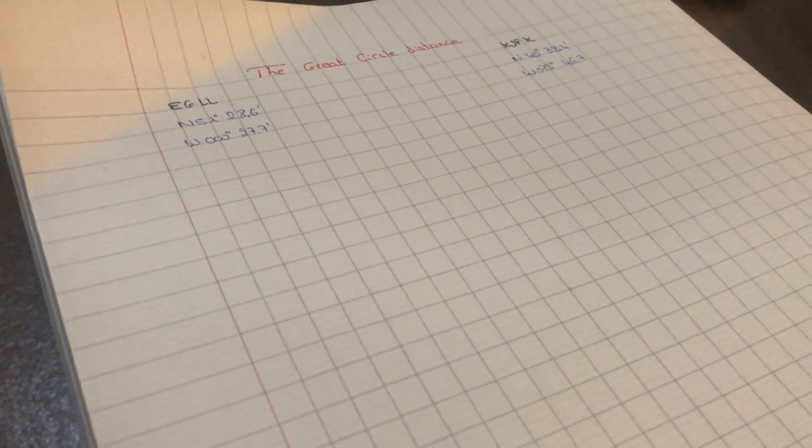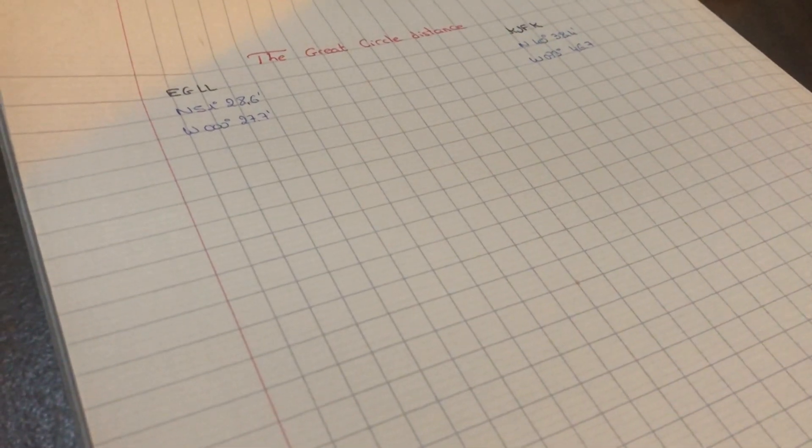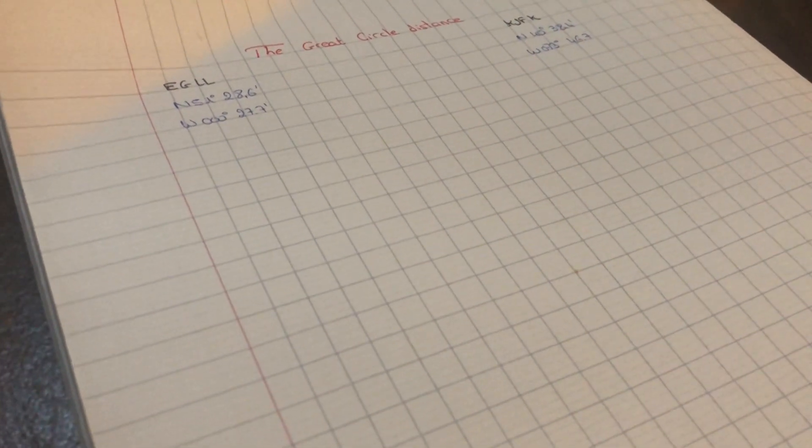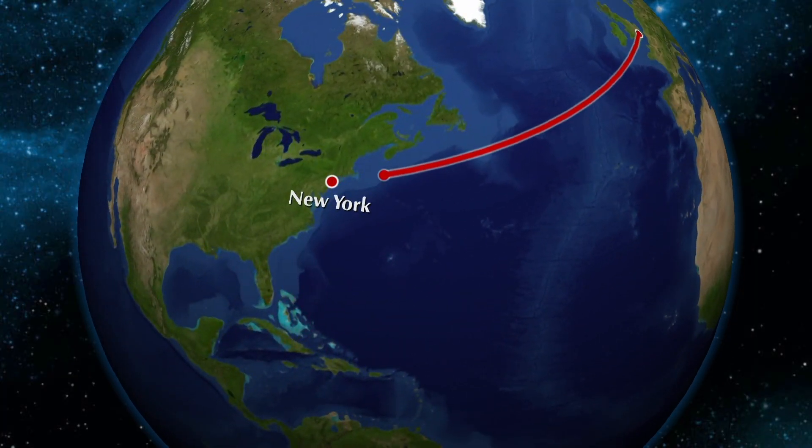Hi guys, thanks for clicking. Today I'm going to be showing you how to calculate a great circle distance between two points. Well first, what is a great circle? The great circle distance is the shortest distance between any two points on a sphere.